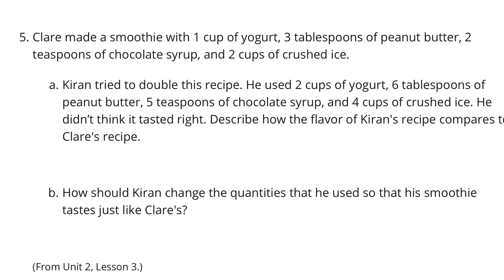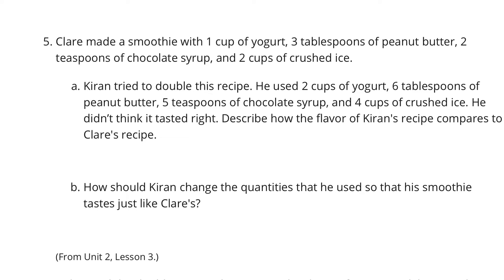Continuing on, Claire made a smoothie with 1 cup of yogurt, 3 tablespoons of peanut butter, 2 teaspoons of chocolate syrup, and 2 cups of ice. Kieran tried to double this recipe. He used 2 cups of yogurt, 6 tablespoons of peanut butter, 5 tablespoons of chocolate syrup, and 4 cups of crushed ice. He didn't think it tasted right. Describe how the flavor of Kieran's recipe compares to Claire's.